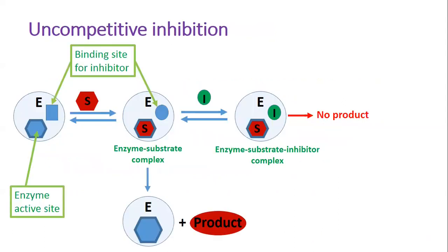The next type of inhibition is uncompetitive. An uncompetitive inhibitor binds at a site distant from the substrate active site, and unlike a competitive inhibitor, binds only to the enzyme-substrate complex, forming the enzyme-substrate-inhibitor complex. This complex doesn't go on to form any product. The binding site for an uncompetitive inhibitor is created only upon interaction of the enzyme and substrate.